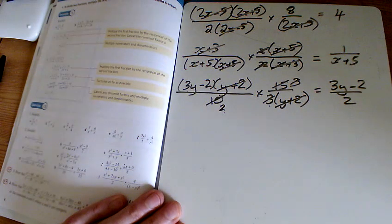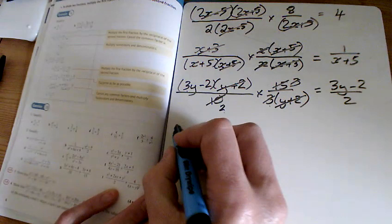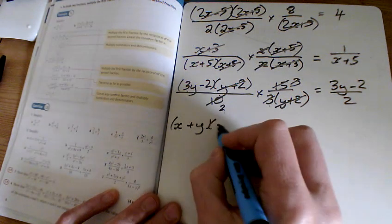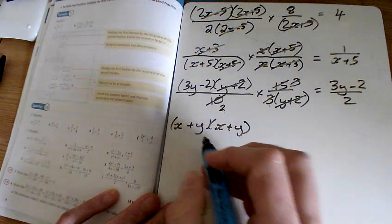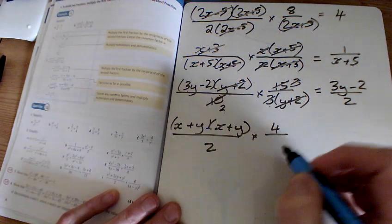So there's h, and the last one we've got then. So the last one is—a bit of factorising on the top here, so we've got x plus y all squared actually, x plus y times x plus y over 2 times by 4 over...